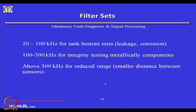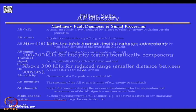Filter sets depend on the acoustic emission application. For leakage and corrosion tests, filters are within 20 to 100 kilohertz. For metallic component testing, filters range from 100 to 300 kilohertz, and above 300 kilohertz for small distances between sensors.